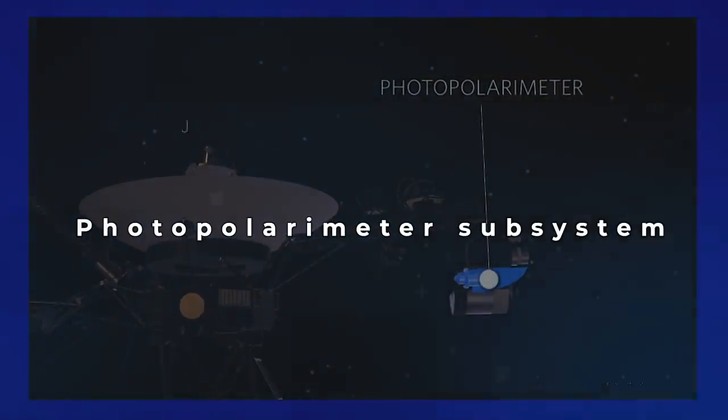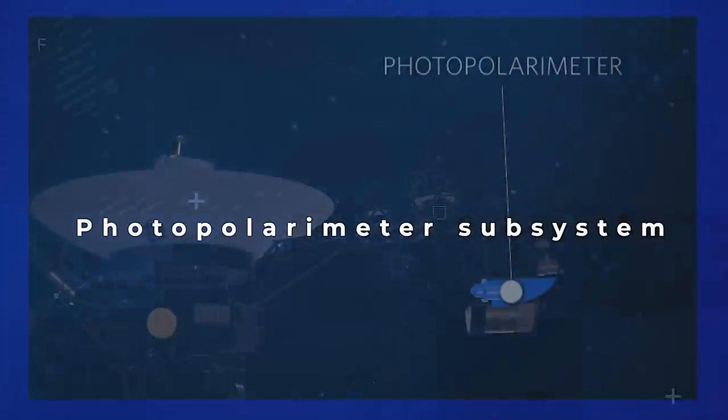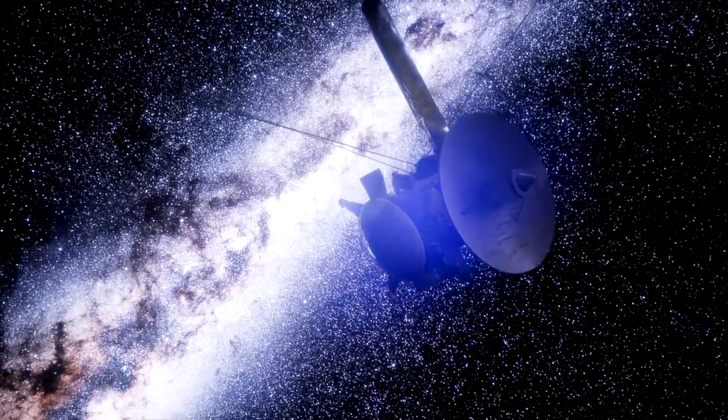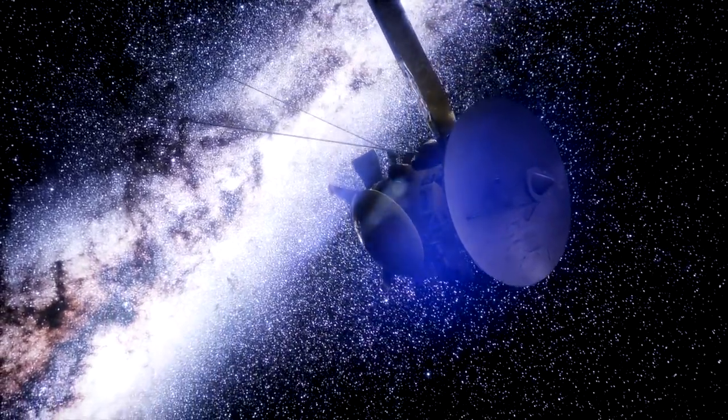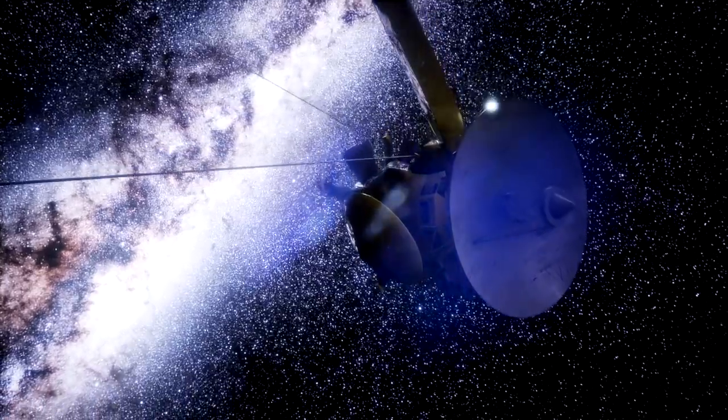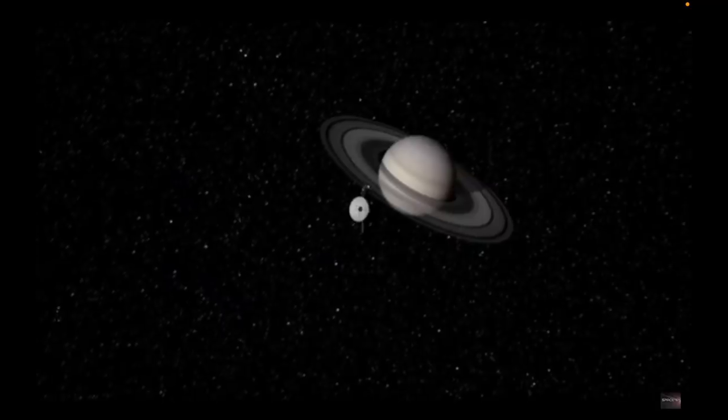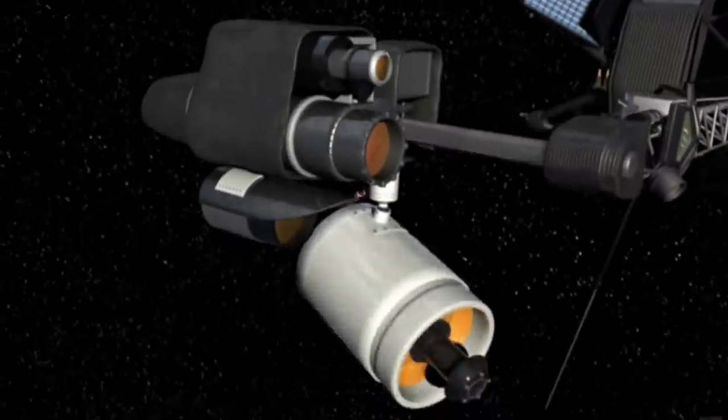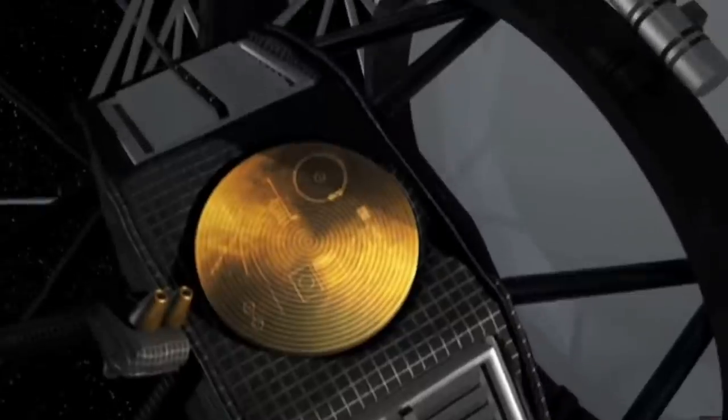Photopolarimeter subsystem. Again, scientific jargon discourages us, but essentially it's a miniature telescope fitted on the craft. The objective of this telescope is to help us figure out how the physical properties of the matter present on the four giant planets. Now, what did all that fancy equipment allow us to pick? Let's take that in order of equipment described above.